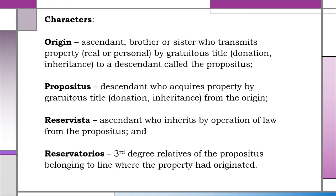The following are the parties to Reserva Troncal. Number 1 is the origin. The origin is the ascendant, brother or sister, who transmits property, real or personal, by gratuitous title, either donation or inheritance, to a descendant called the propositus.